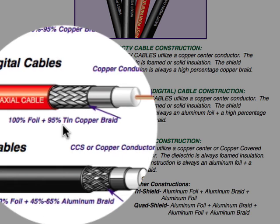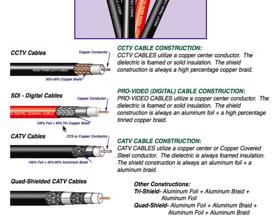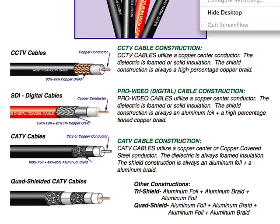So an SDI cable is the best of both worlds — it gives you the best protection for both low-frequency and high-frequency noise. And that covers the differences between CCTV, SDI, and CATV coaxial cable design. I'll see you next time.